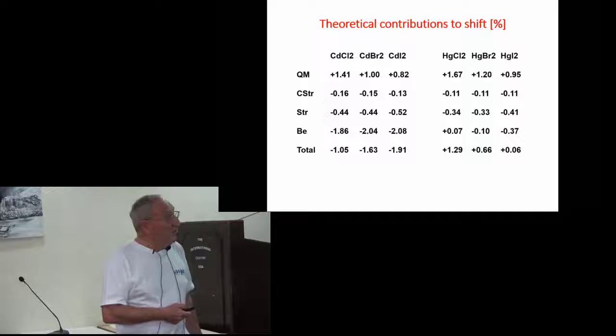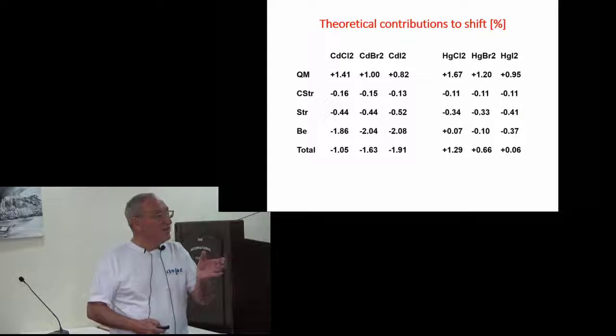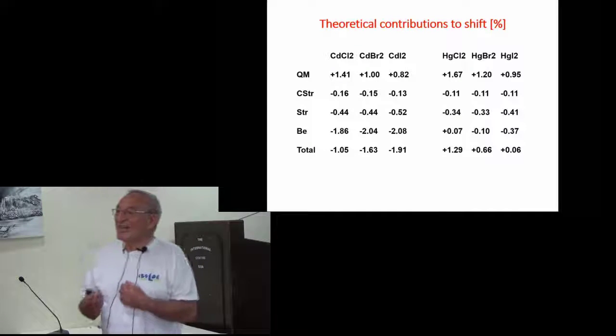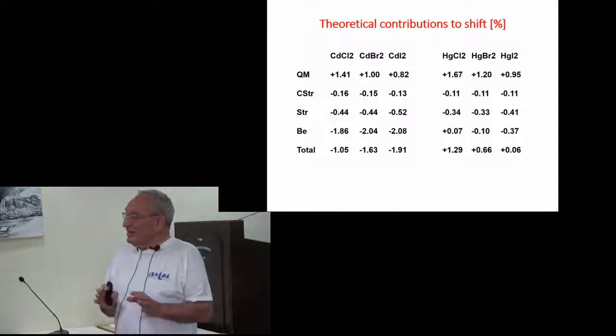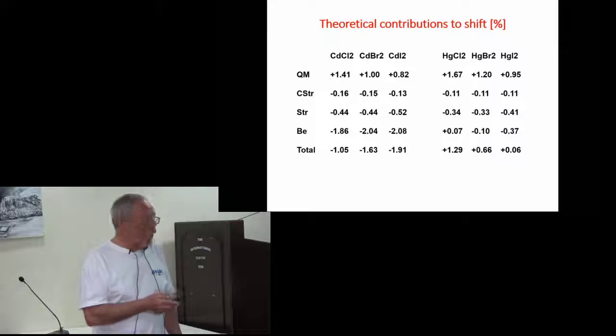So what are then the theoretical contributions of all this? Well, I showed you the quantum mechanics will in principle increase the interaction energy. The stretching will slightly decrease it. All these are in percent. The centrifugal stretching will slightly... The stretching vibrations will also decrease it. The bending vibrations will decrease the expected number at the temperatures that we measure on the order of two percent for cadmium. And strangely enough for the mercury, at least in theory, they are much more stable toward bending.